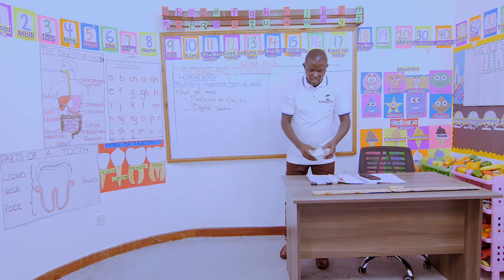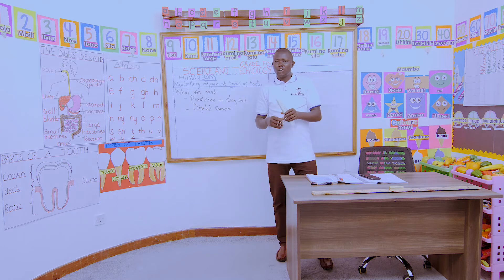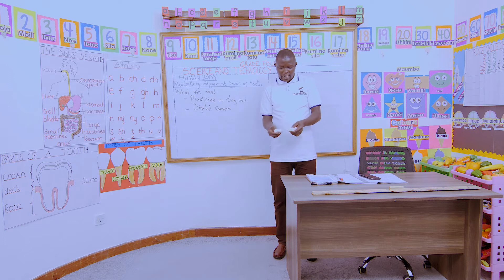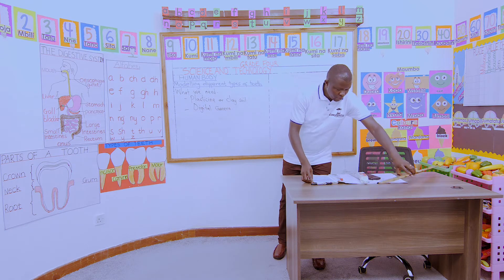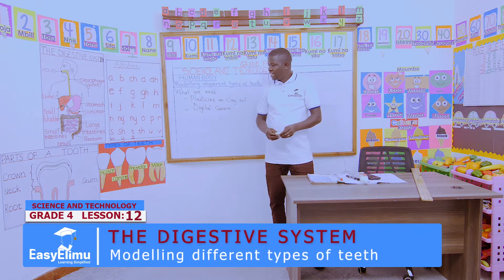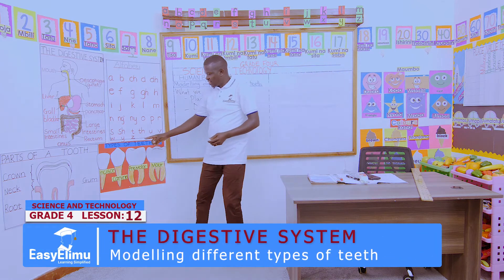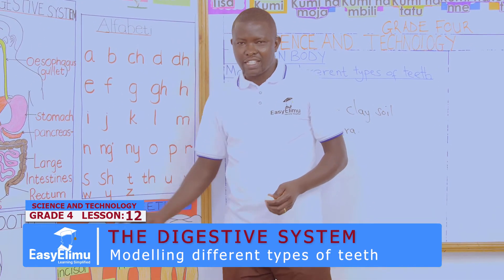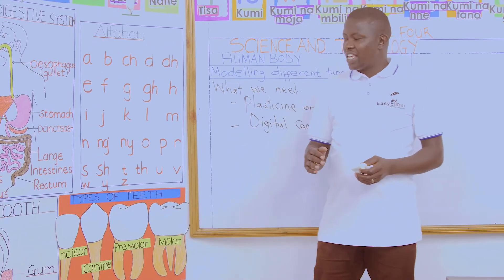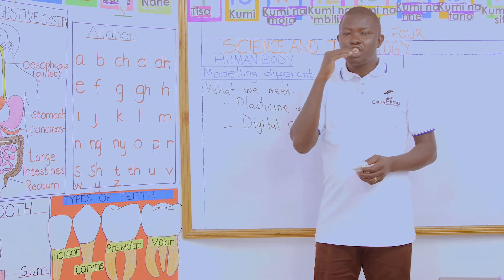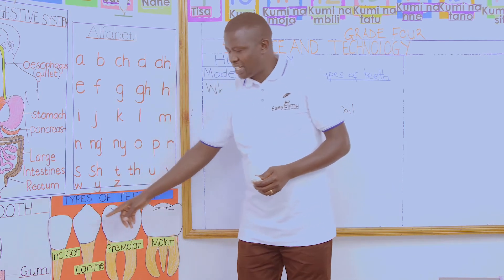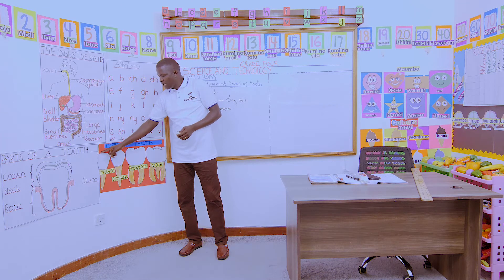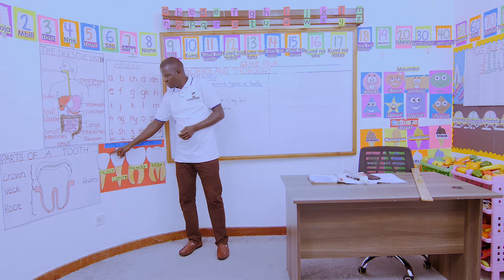The first type of teeth — everybody, take your clay or plasticine, just take a portion of the clay. The first type of teeth is called incisors. How do we model incisors? We say they are flat and chisel-shaped at the top. So as we model, make sure the incisors are almost flat and chisel-shaped at the top.